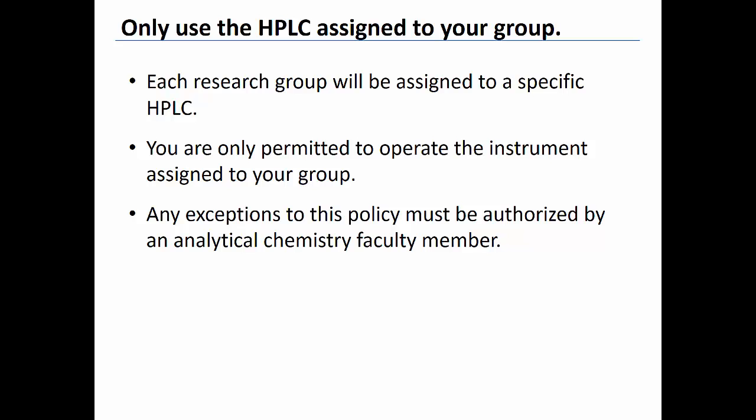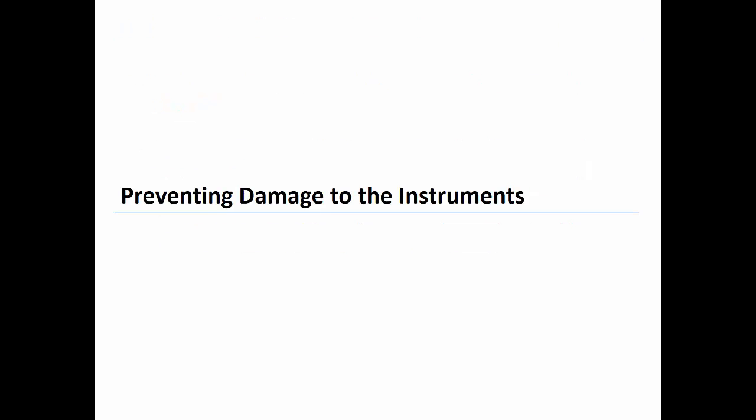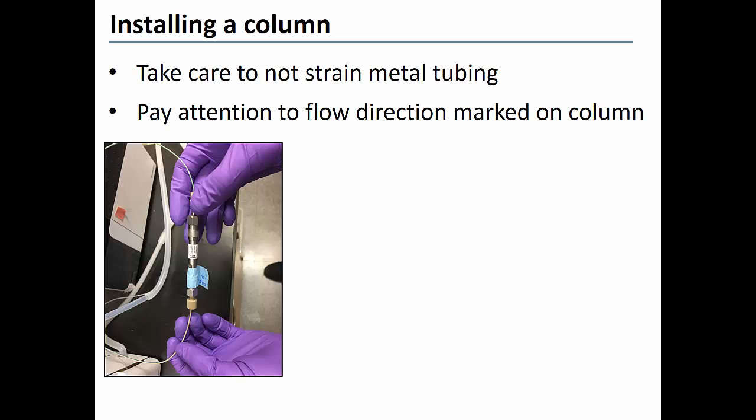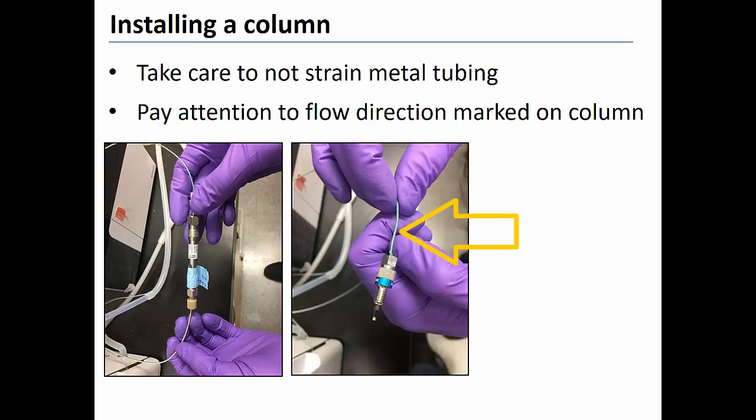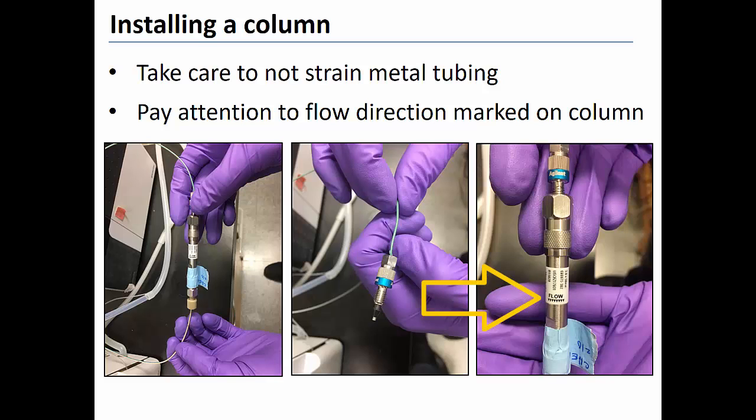Next, let's consider some important steps you can take to minimize the risk of damaging the HPLC assigned to your group. When you install an HPLC column, be careful not to exert any unnecessary strain on the metal tubing leading to the inlet side of the column. This metal tubing can snap if kinked or strained. All HPLC columns are marked with the correct mobile phase flow direction. Be sure to connect the column accordingly.